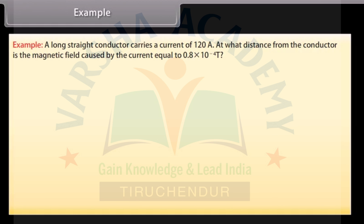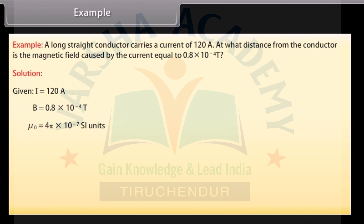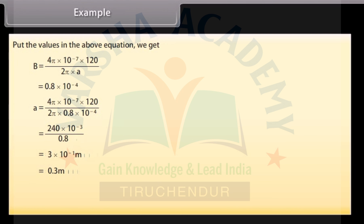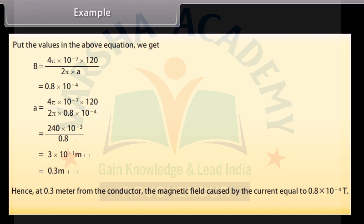Example: A long straight conductor carries a current of 120 Ampere. At what distance from the conductor is the magnetic field caused by the current equal to 0.8 × 10⁻⁴ Tesla? Given: I = 120 A, B = 0.8 × 10⁻⁴ T, mu naught = 4π × 10⁻⁷ SI units. Using B = mu naught I / 2πR and substituting values, we get R = 0.3 meters. Hence, at 0.3 meters from the conductor, the magnetic field equals 0.8 × 10⁻⁴ Tesla.